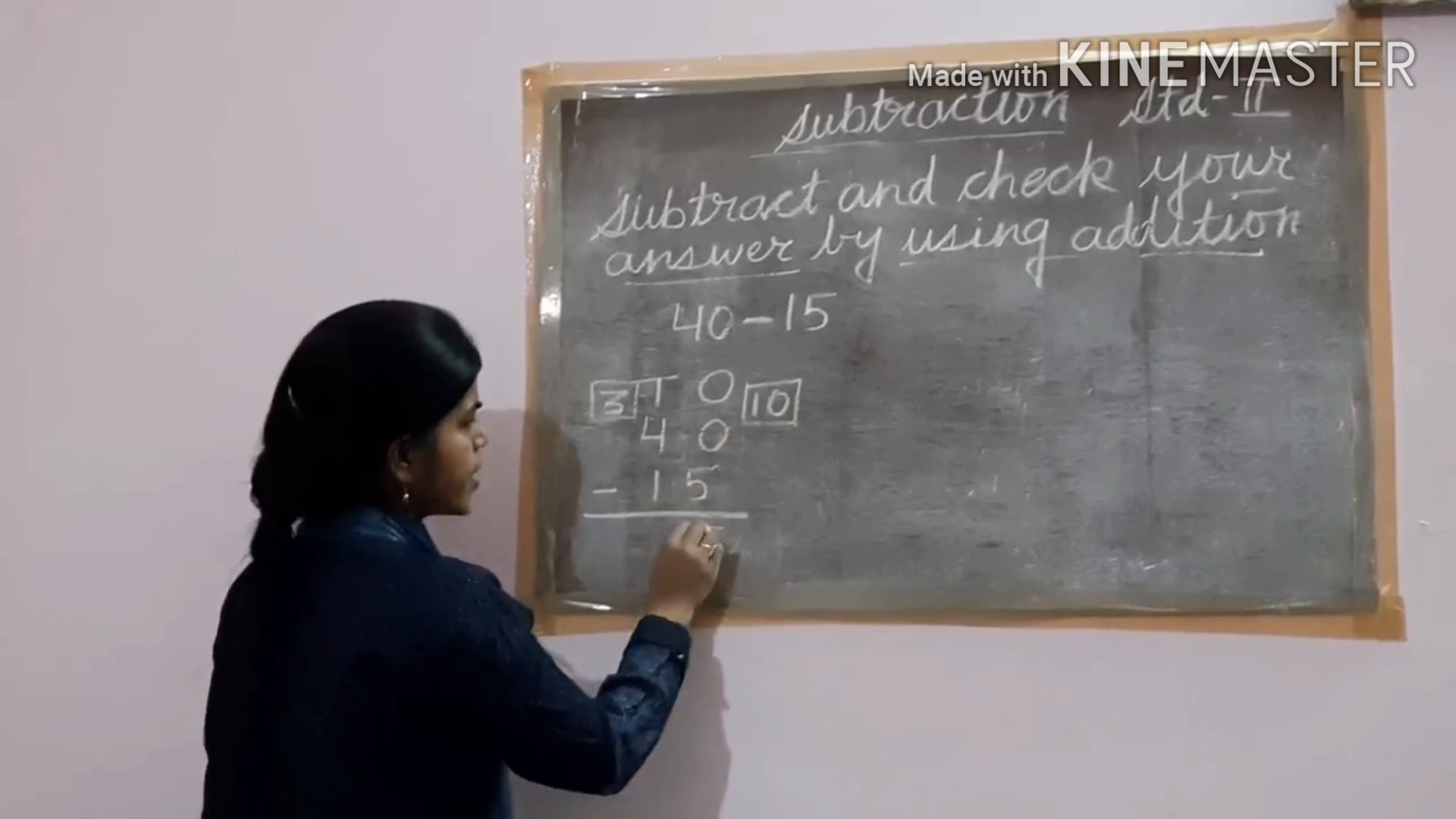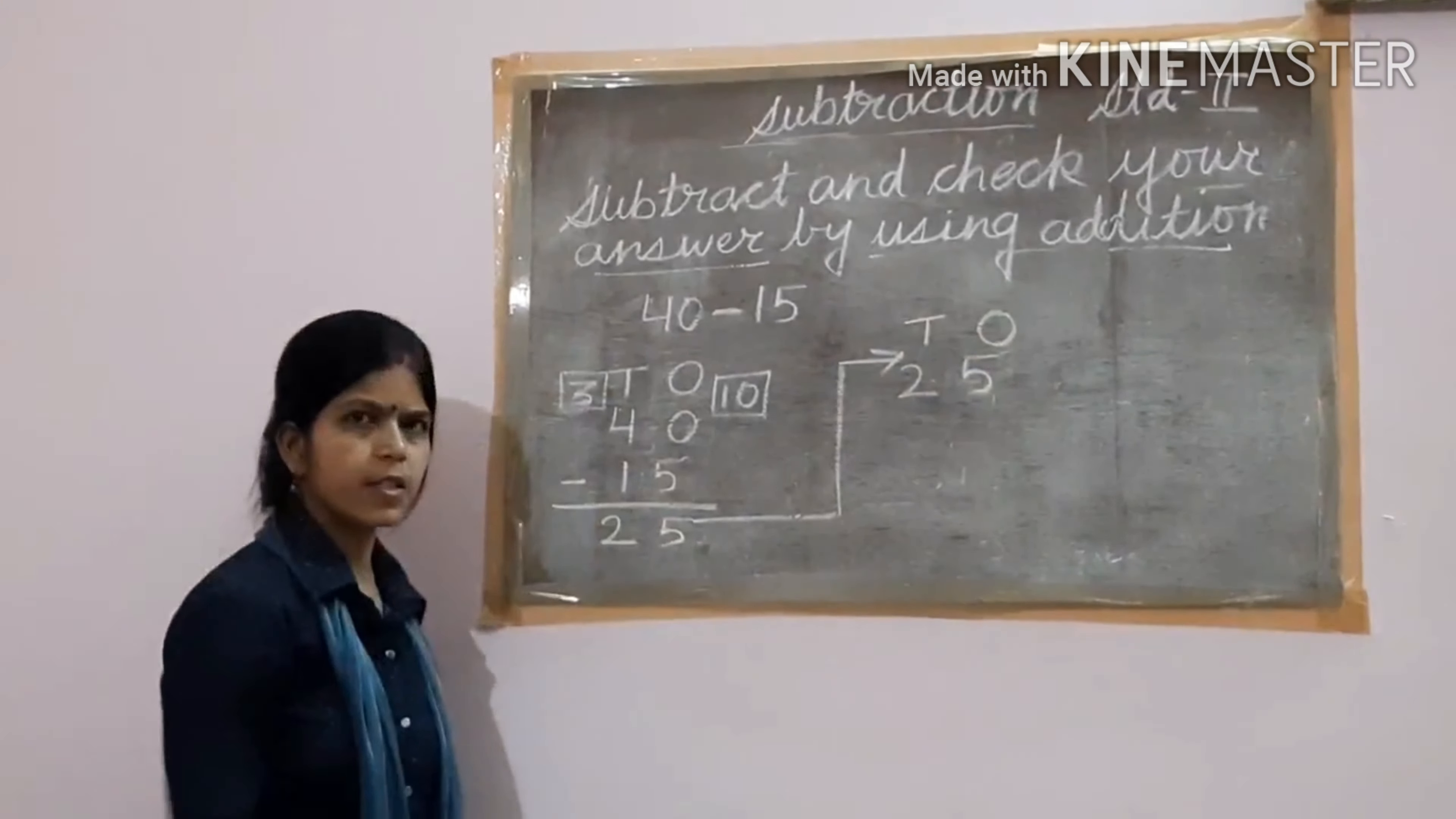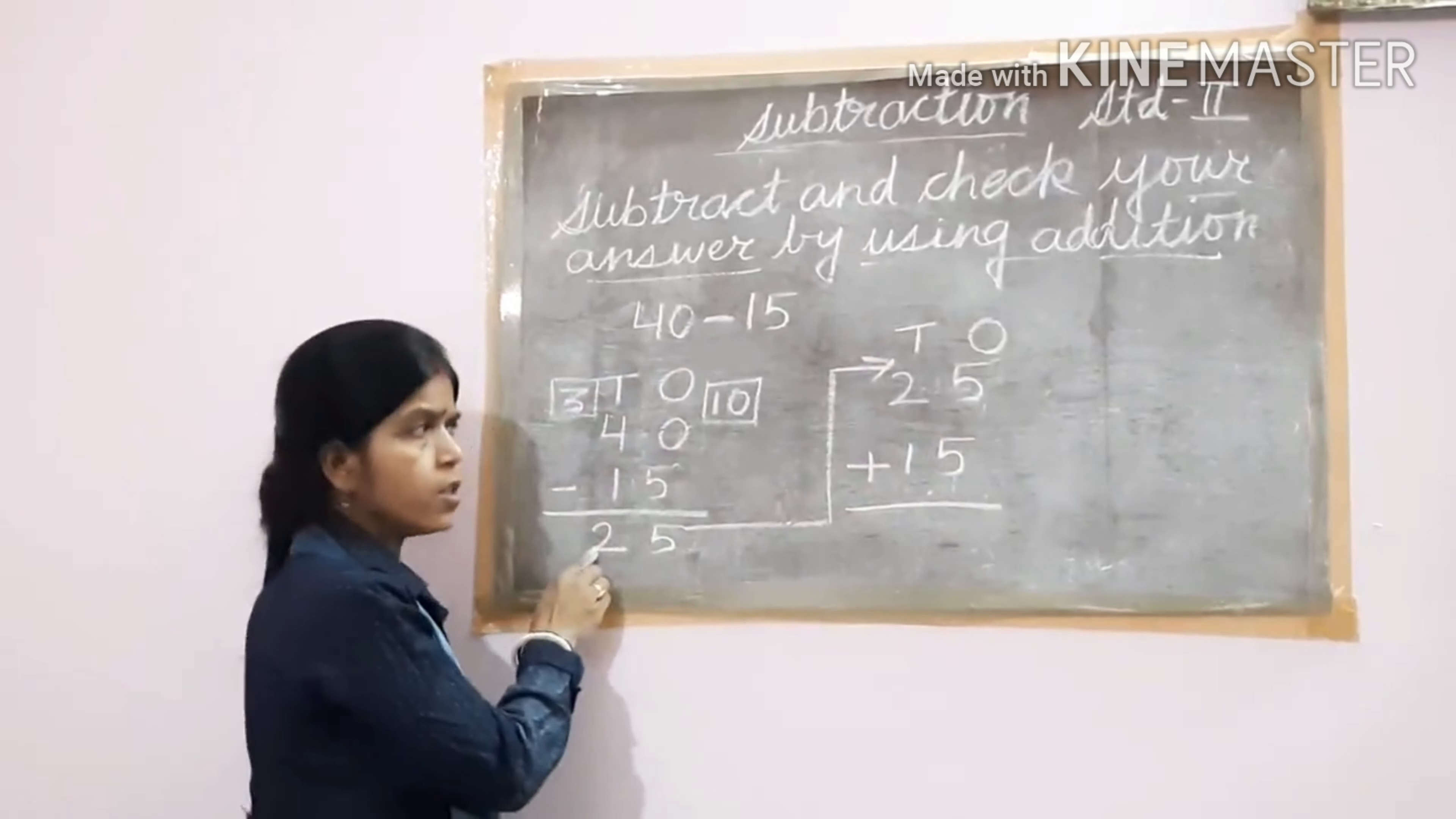Then 10 minus 5, that is 5. And 3 minus 1, 2. Now you have to check. So 25 as I said, we will write up. Tens place, ones place, 25. Now what you have to write below it? Not 40. You have to write how many numbers you have subtracted, that only. Here, same, 15. Sign of addition, because you are going to check your subtraction whether this answer is correct or not.